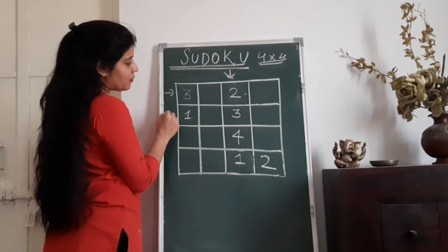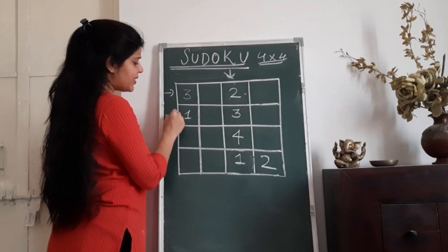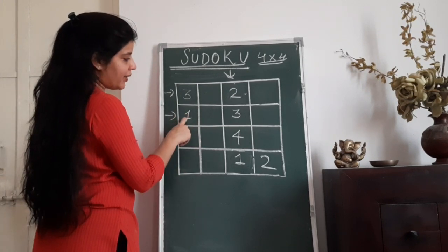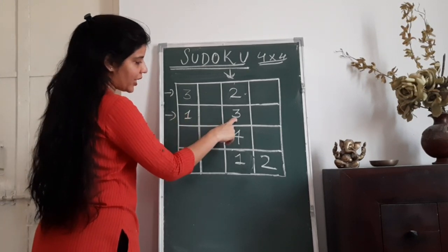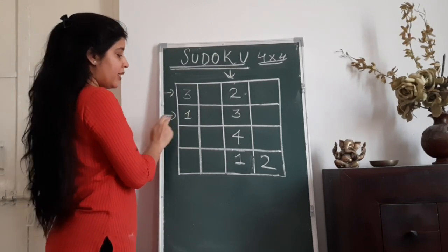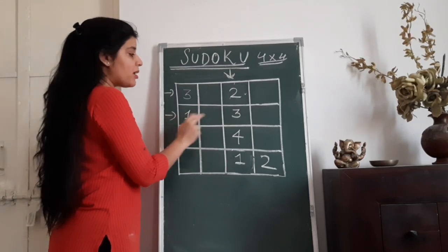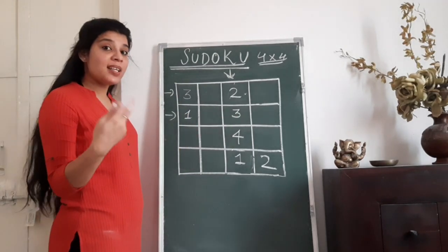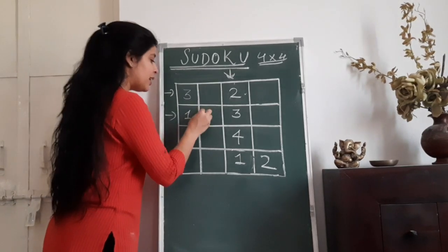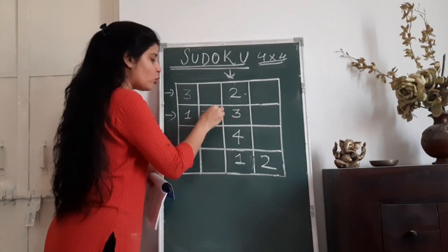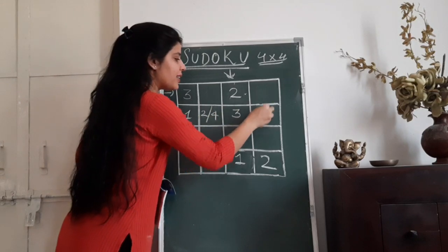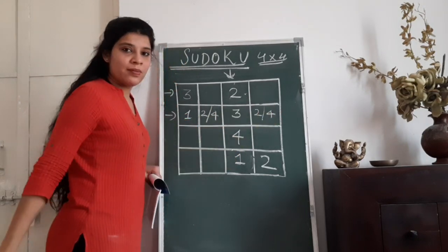Now let's move on to the second row. In the second row, the numbers 1 and 3 are already used. What are the remaining numbers which I have to put? This cell can have 2 or 4. In a similar manner, the other cell can also have 2 or 4.